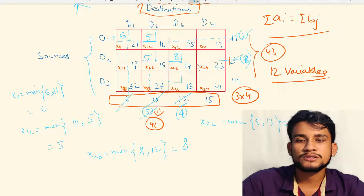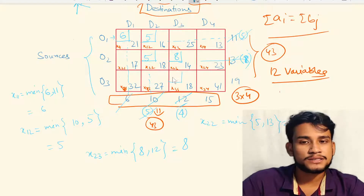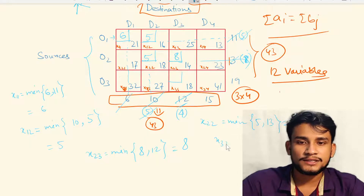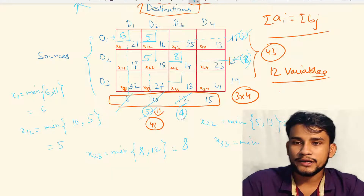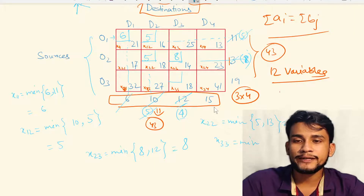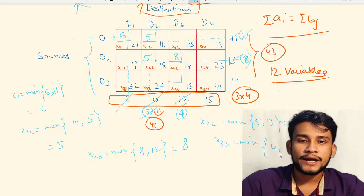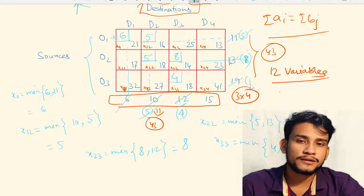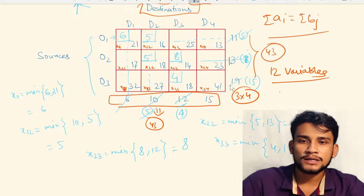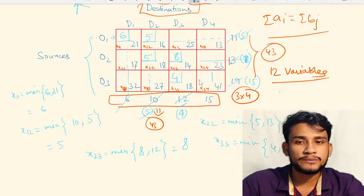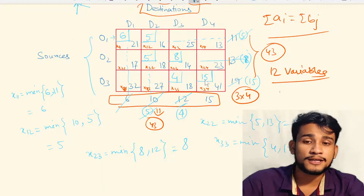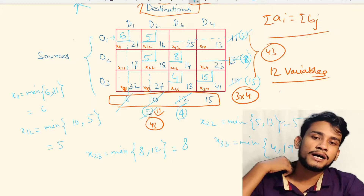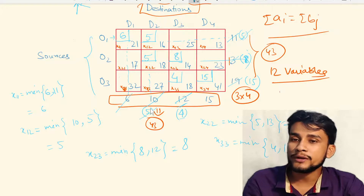The next northmost and westmost cell — with previous cells closed — is x33. x33 = minimum(remaining demand of D3, supply of O3) = minimum(4, 19) = 4. We write 4 here. The remaining supply from O3 is 19 − 4 = 15 units. The remaining cell x34 receives the remaining supply of 15 from O3.